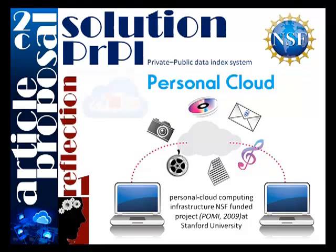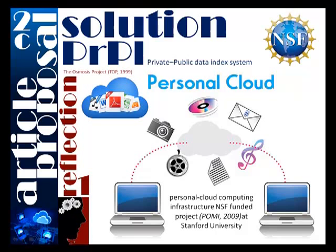According to the article, the solution is a private public data index system, or PRPL for short. The first attribute of this solution is that all items are stored in personal clouds. I found this as one of the most interesting topics in this article. It reminded me of a job I did some time ago called the Osmosis Project, where my students and interns were collecting their personal portfolios, but there was no proper cloud computing available at that time. I wish I had read this article way back then.